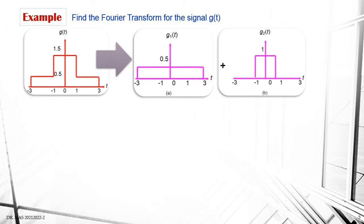Let's look at the second example on superposition or linearity. Find the Fourier transform of g(t). The signal g(t) has a shape that is basically a combination of rectangular functions. In this case, I'll divide this signal into two components: the first one is g1(t) and the second one is g2(t). So g(t) is basically g1(t) plus g2(t). If you total them up, you get g(t).